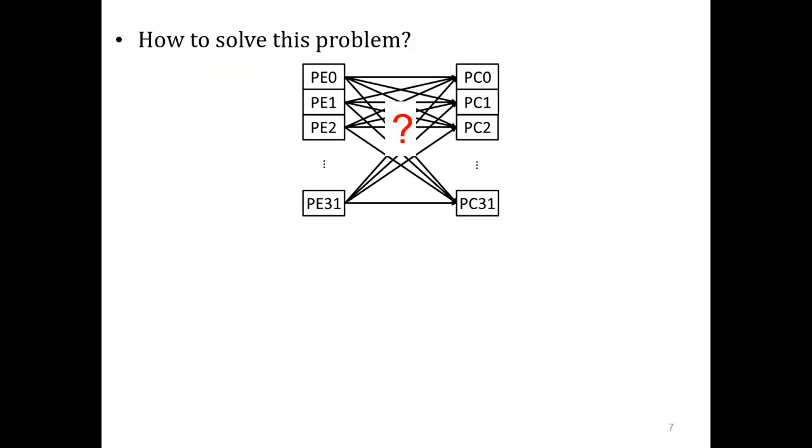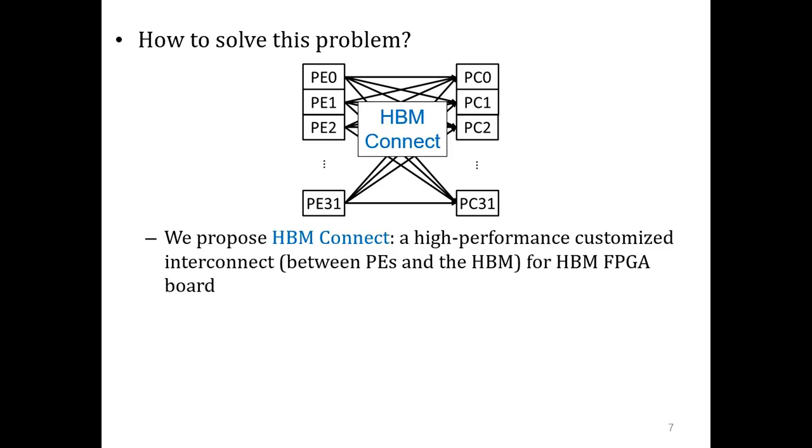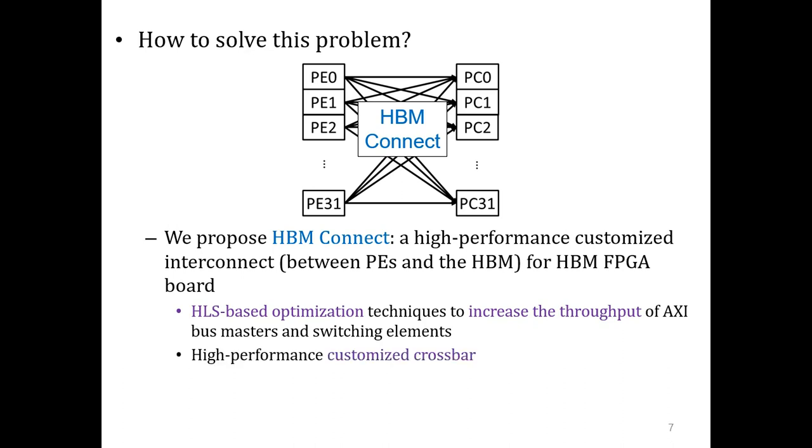To solve this problem, we propose HBM Connect, a high-performance customized interconnect for HBM FPGA boards. We present HLS-compatible optimization techniques to increase the throughput of AXI bus masters and switching elements. We also introduce a high-performance customized crossbar to replace the built-in crossbar, and we find the design point with the best bandwidth resource trade-off.